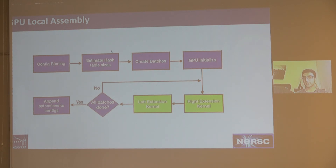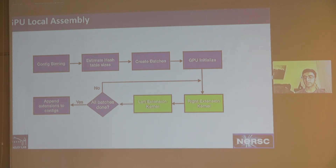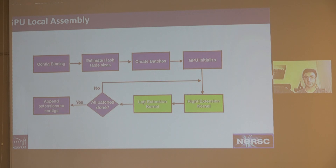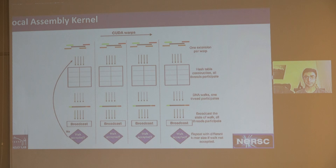The next step is to estimate hash table sizes accurately. If you use the maximum hash table size for all assemblies, you can only fit a handful of local assemblies on the GPU at once. But if you measure the accurate hash table size for each local assembly and allocate exactly that amount, you can pack the GPU with just enough work to get good performance. After that we make batches, initialize the GPU, run the right-extension kernel and left-extension kernel — these are essentially the same kernel with different data — and repeat until all batches are done. On the CPU side, we copy results back and append extensions to each end of the contigs.